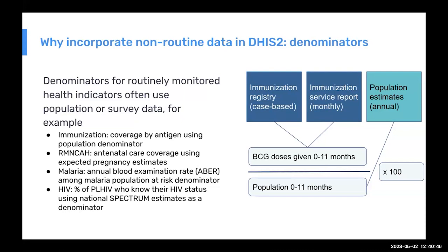As an example, the BCG coverage indicator: your service data could come from a case-based system or from a monthly immunization report, but in any case you need to have the under-one population available in DHIS2 to be able to produce the coverage indicators.